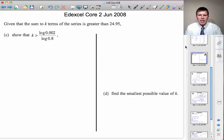Given that the sum to k terms of the series is greater than 24.95, show that k is greater than log of 0.002 divided by the log of 0.8. Our starting point here is the sum to n terms of the geometric series.